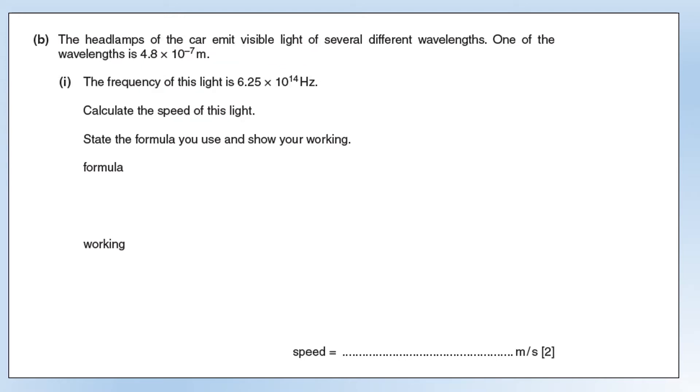The headlamps emit visible light of lots of different wavelengths, one of which is 4.8 times 10 to the minus 7. The frequency is 6.25 times 10 to the 14. Calculate the speed of this light. It's visible light, so we'd expect our answer to be 3 times 10 to the 8. Speed is wavelength times frequency. So if we plug the numbers in, exactly as expected, the velocity comes out as 3 times 10 to the 8. Because it's part of the electromagnetic spectrum, and the speed in air is pretty much the same as the speed in a vacuum.